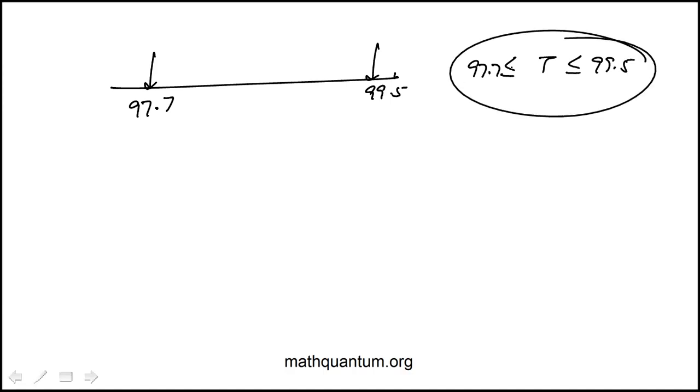Now what they're asking us to do is to rewrite this in an absolute value form. So turning this inequality, or geometrically that, into an absolute value. So the way to do this is to find the average of these two numbers.